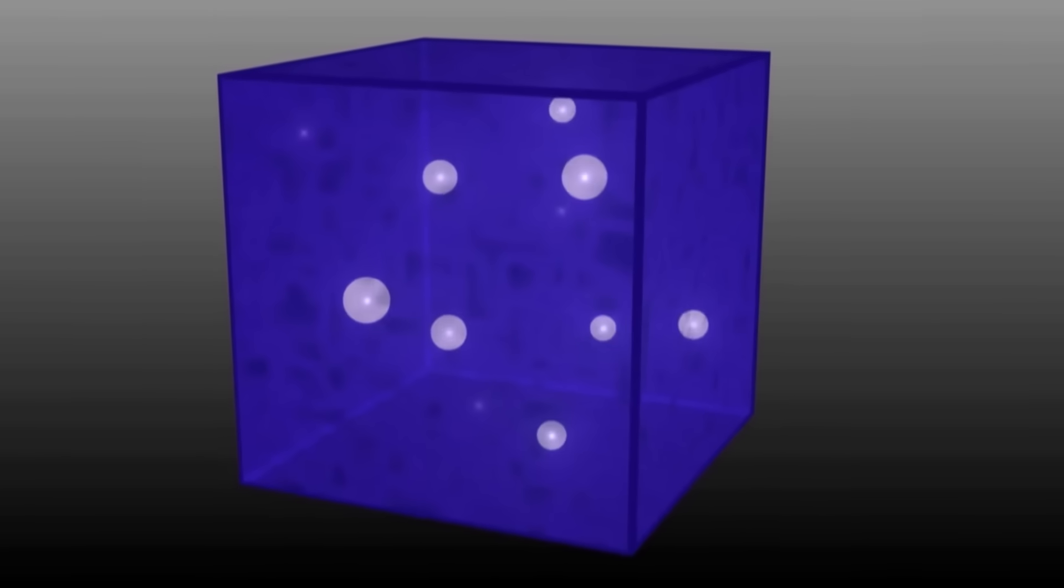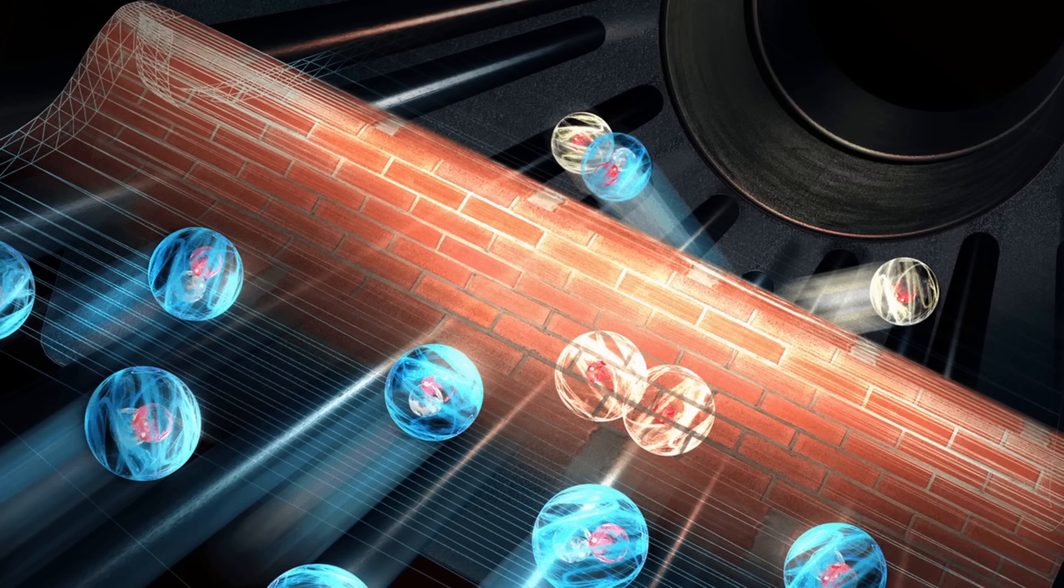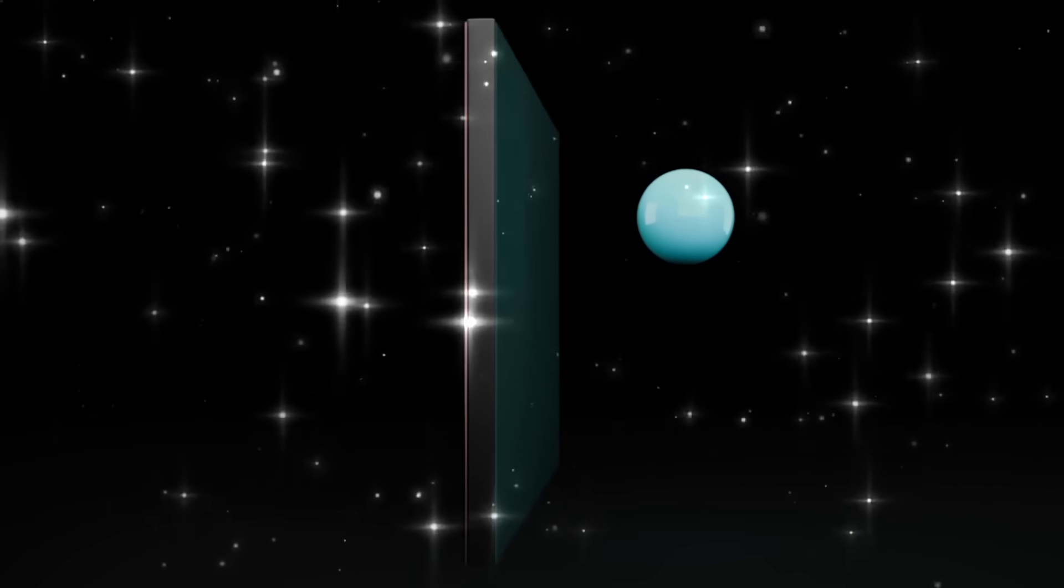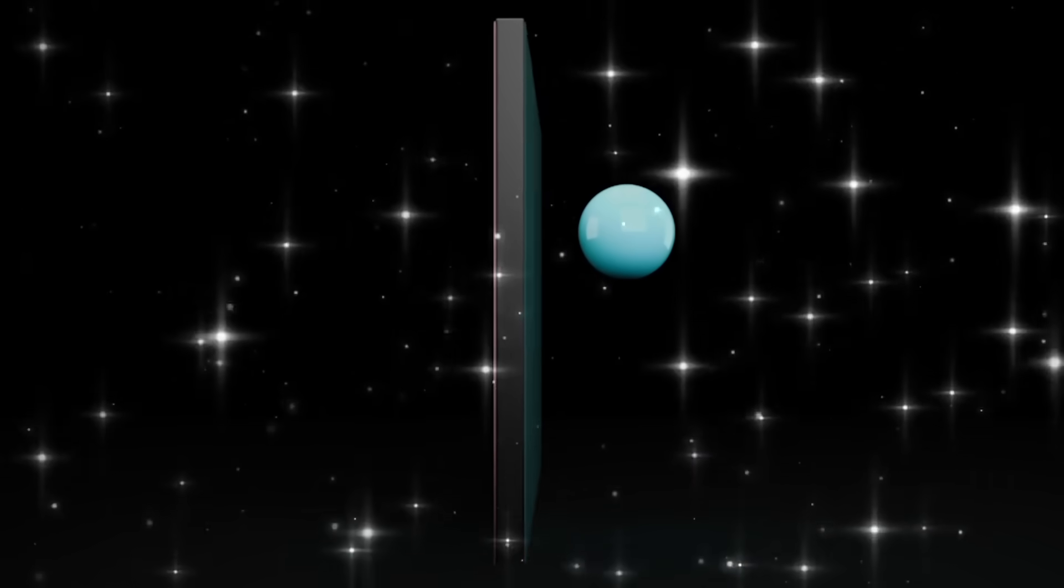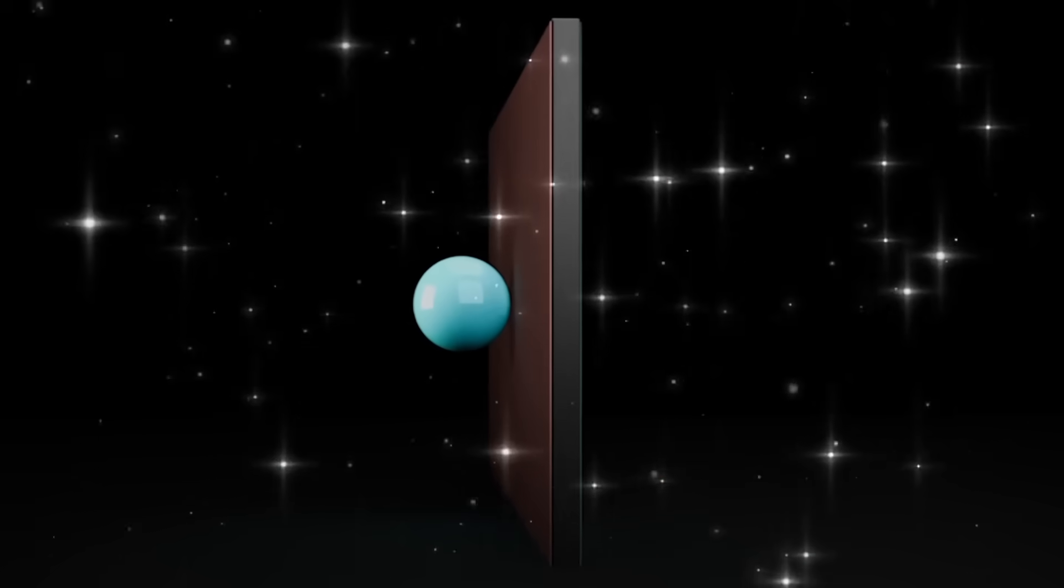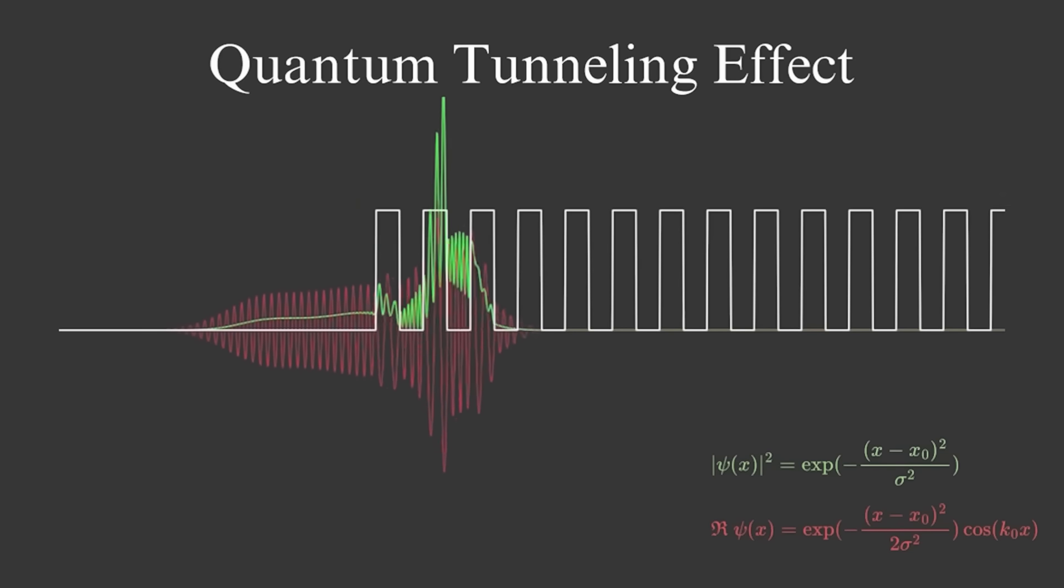But what happens when that delicate pattern meets a wall, a barrier it shouldn't cross? Classical physics says if a ball doesn't have enough energy to climb a hill, it will stop. Quantum mechanics says the ball can disappear on one side and reappear on the other without ever going over.